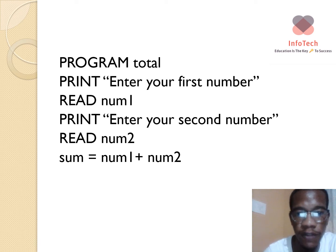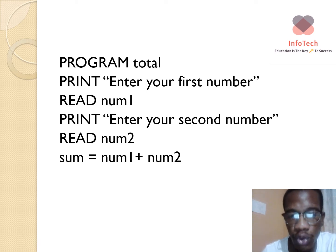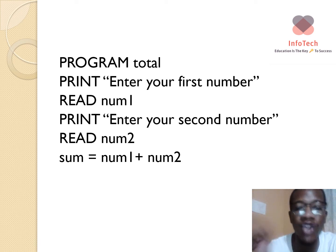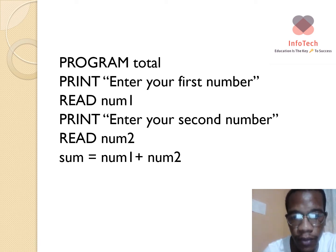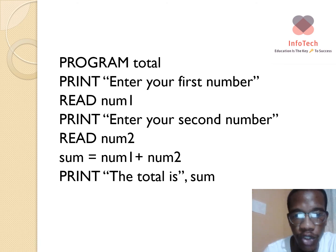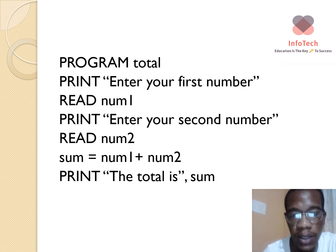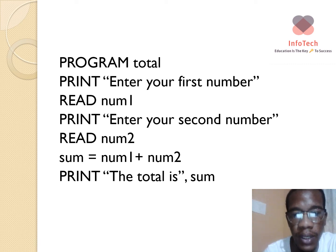The formula is: sum equal to number one plus number two, meaning the value in number one plus the value in number two. We then print: 'The total is' followed by the variable sum — whatever value is stored in sum will be printed on the screen along with that message in quotation marks.